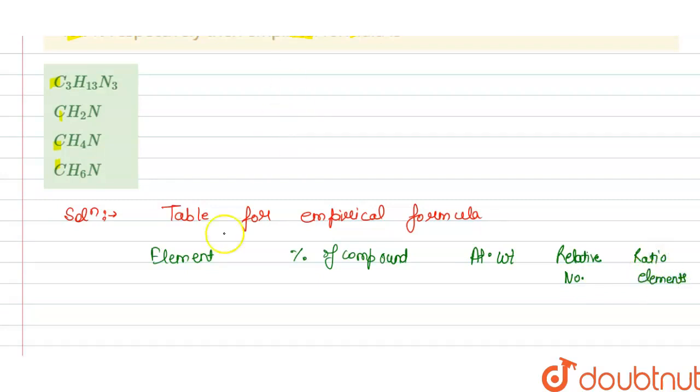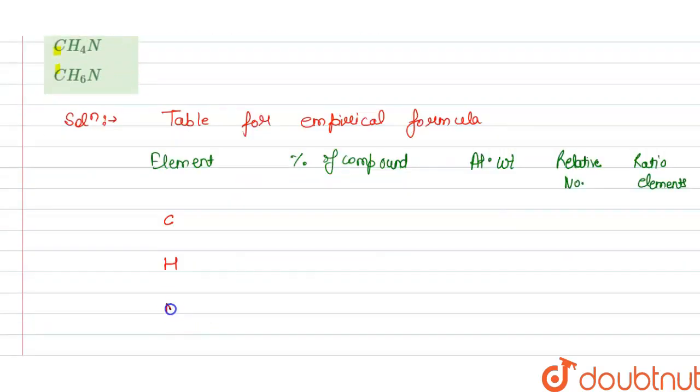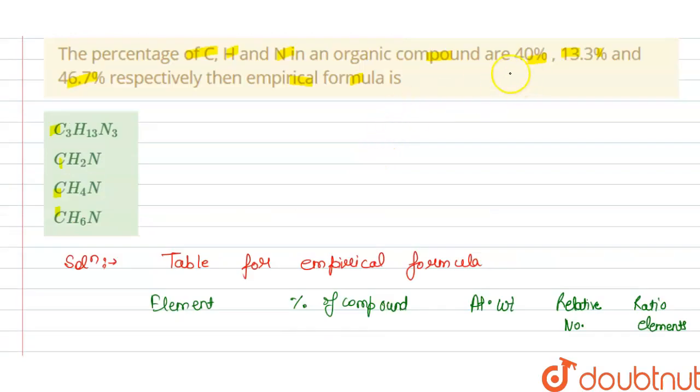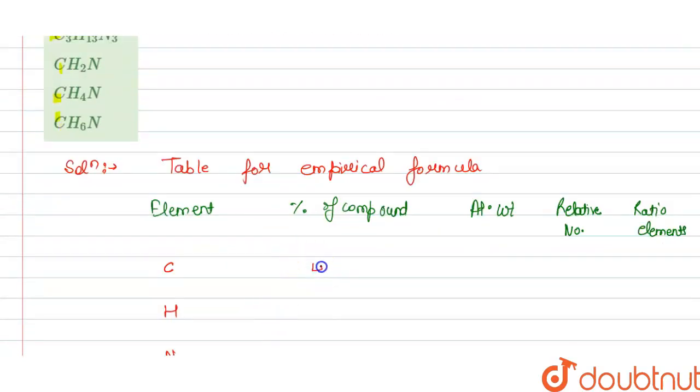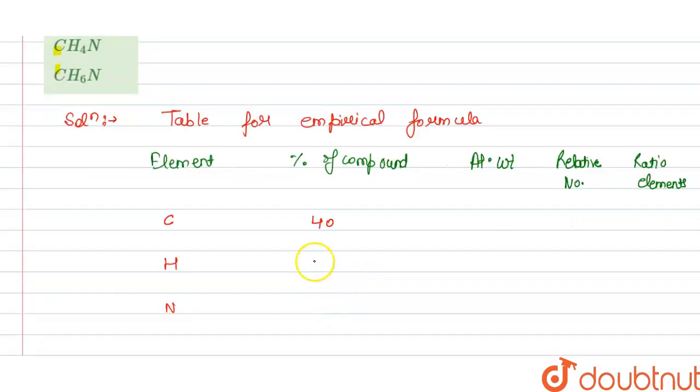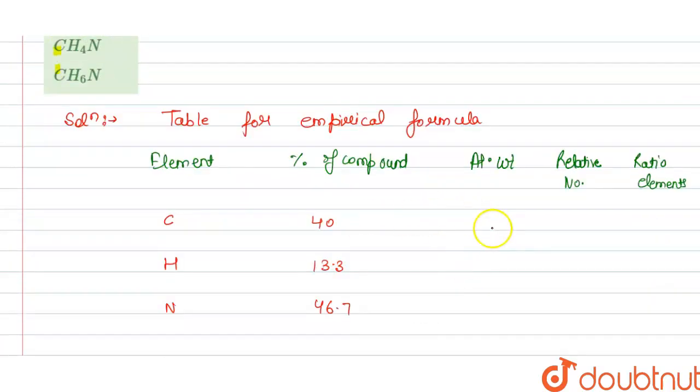So we have the elements carbon, hydrogen, and nitrogen. Percentage of carbon is 40, hydrogen is 13.3, and nitrogen is 46.7. We have the atomic weight of carbon is 12, hydrogen atomic weight is 1, nitrogen is 14.